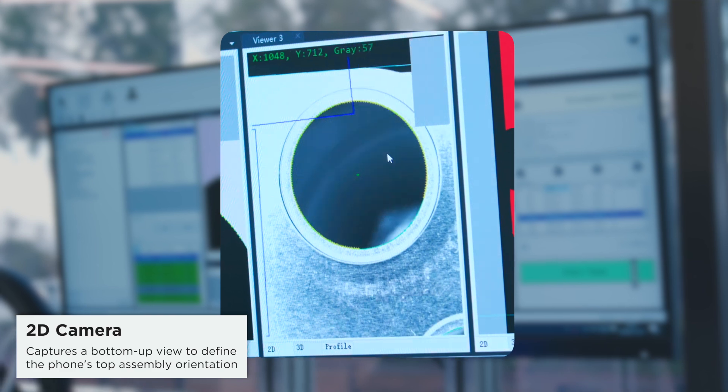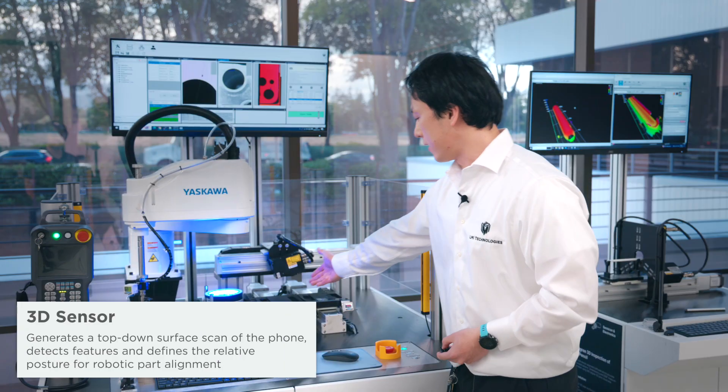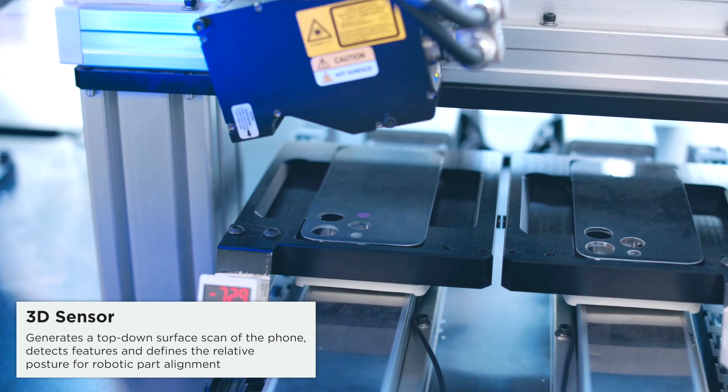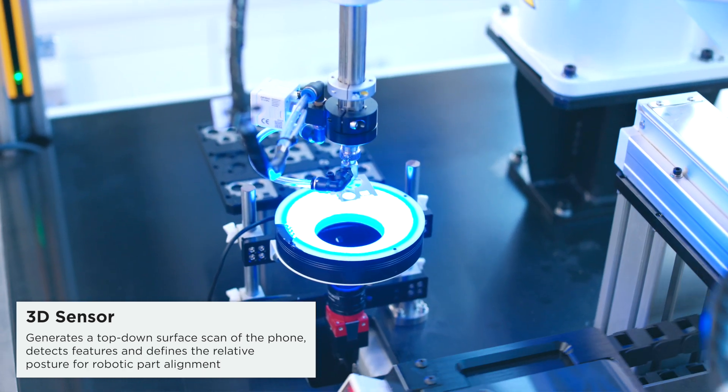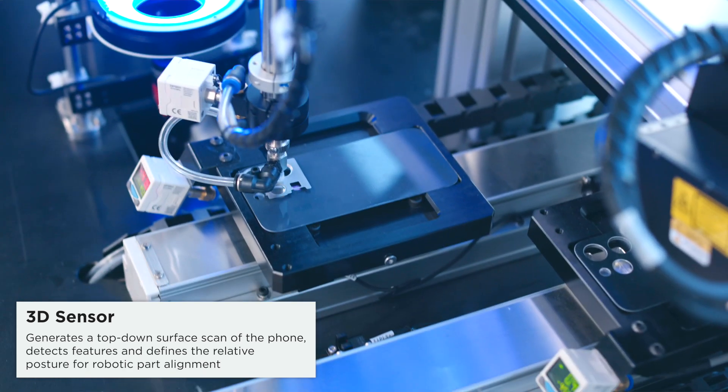There's some tool gauge that detects the circle over here. And the GoCator will scan the back glass and there's some features on the back glass that we're looking for. And we'll align together to find the relative posture between them and then align together to place it together.